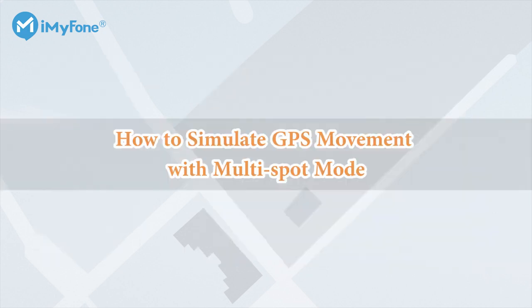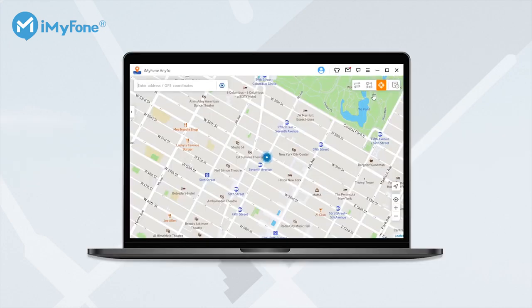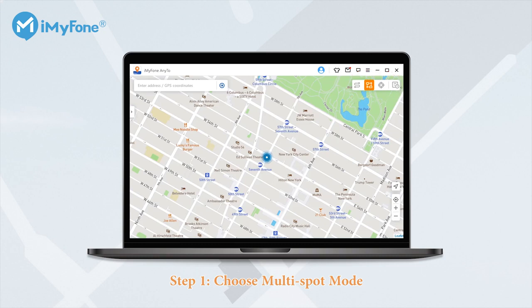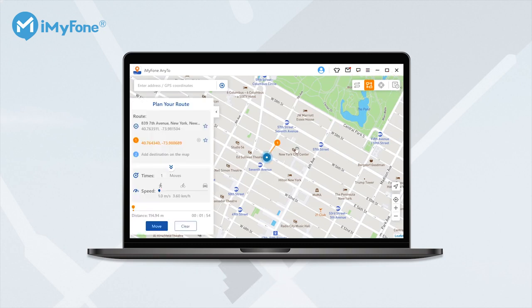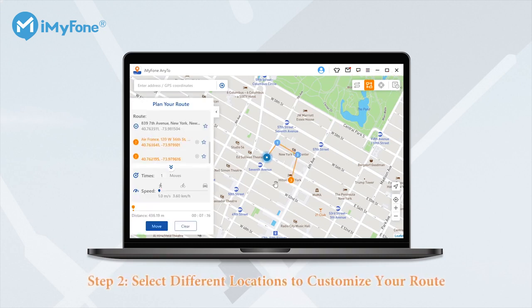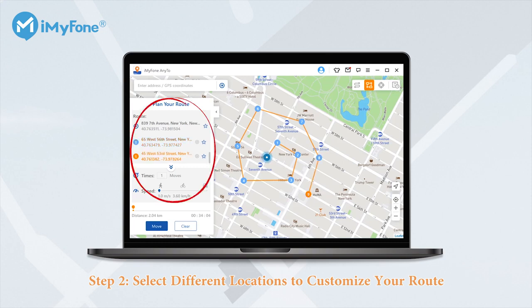How to simulate GPS movement with multi-spot mode. To select multi-spot mode you have to select the second icon on the top right corner, then just pin different spots one by one that you want to pass by. Once you pin a location, the information of that place will be shown on the sidebar.